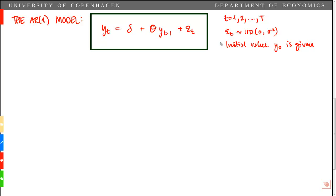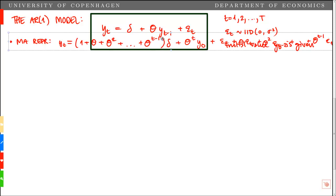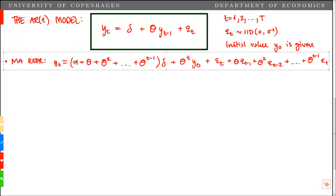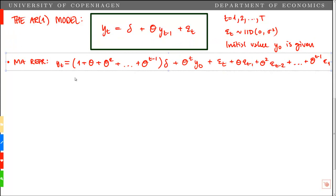We make the assumption that the shocks epsilon t are iid with mean 0 and variance sigma squared. We also assume that the initial value y0 is given. In the first video, we showed that the MA representation for the AR1 model is given by the following.